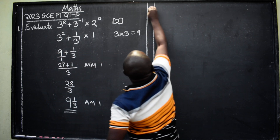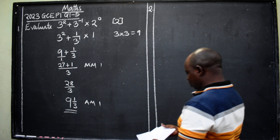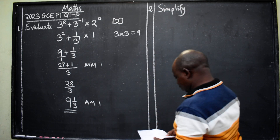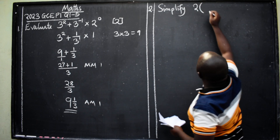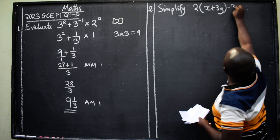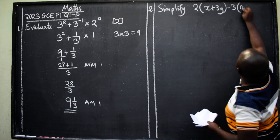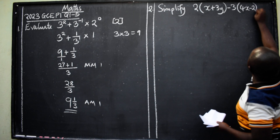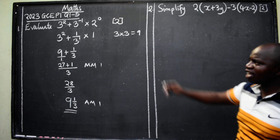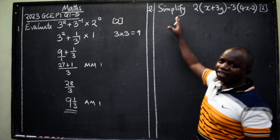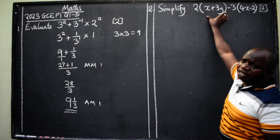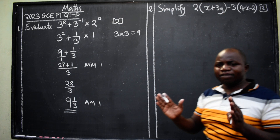Let's move on to question two. We are asked to simplify: 2(x + 3y) minus 3(4x minus 2). This was also given 2 marks. This time we are not evaluating — we are simplifying, reducing the number of terms. Since we have brackets, that is our starting point.